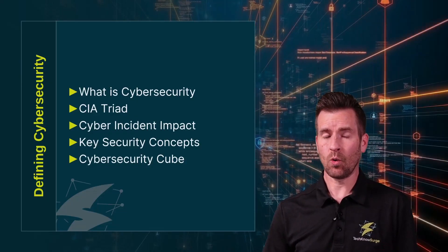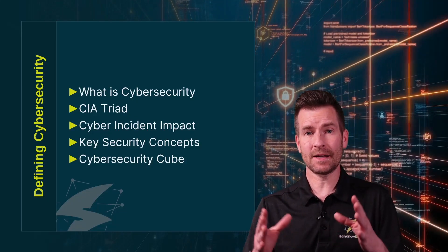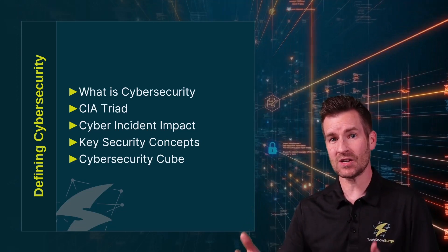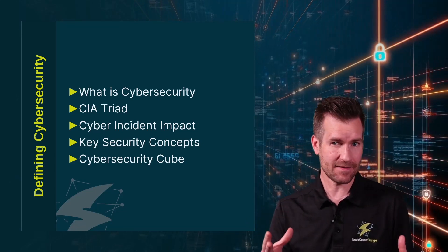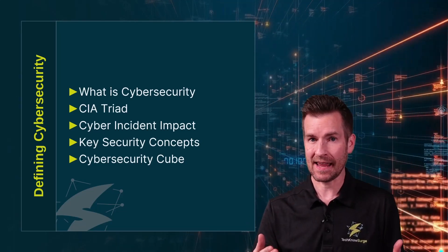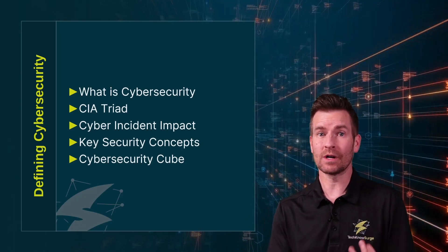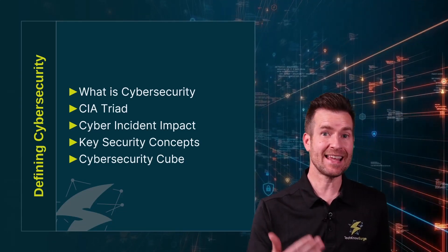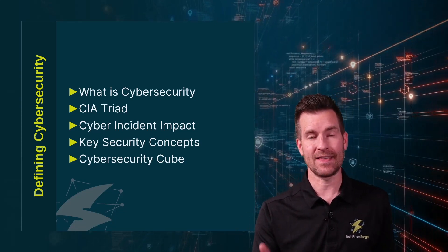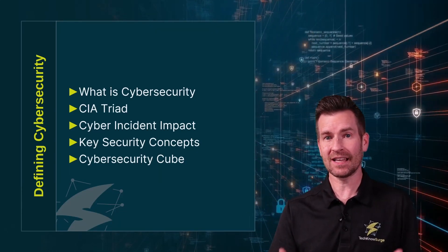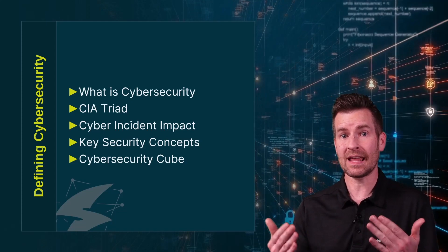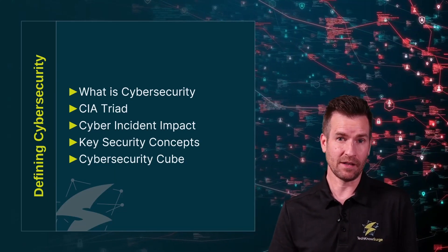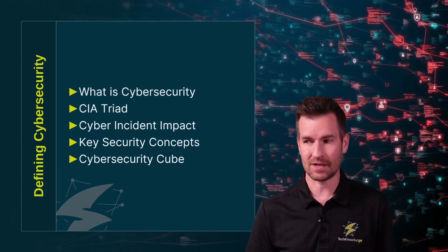In this module, we're going to start out by talking about what cybersecurity is and the scope of cybersecurity, to make sure we're on the same page. And then we're going to get into the CIA triad — that's confidentiality, integrity, and availability — and what that looks like. It's the three pillars of cybersecurity.